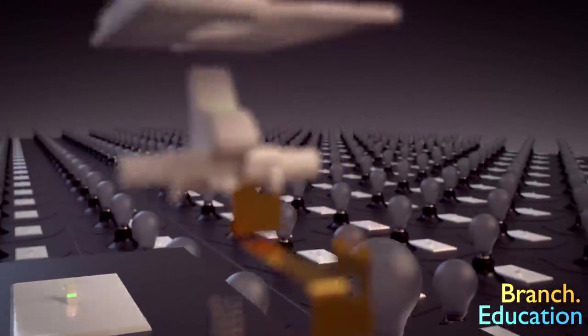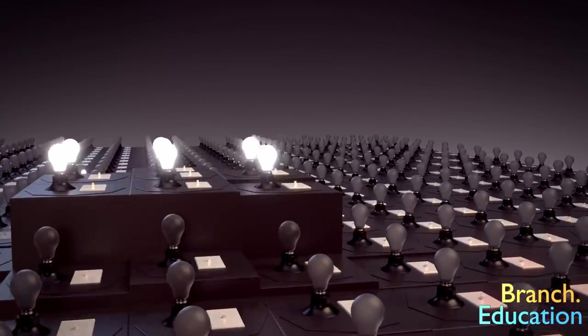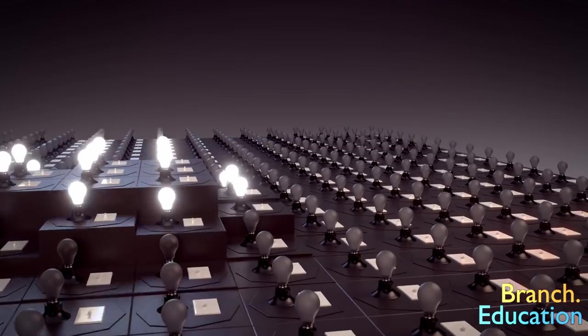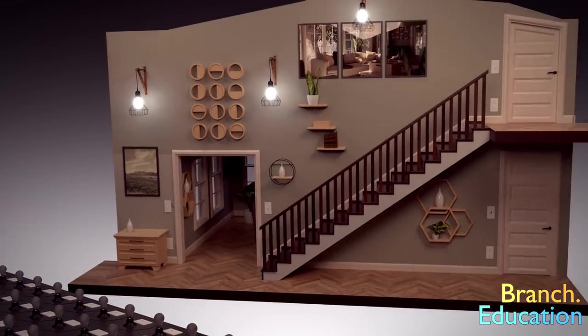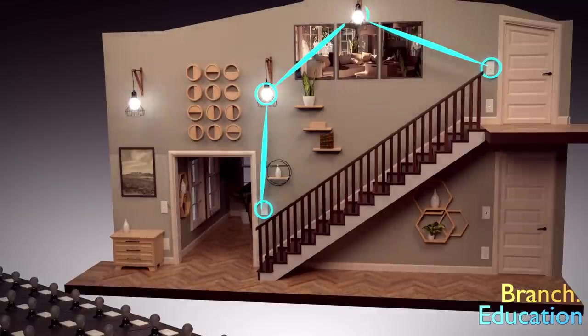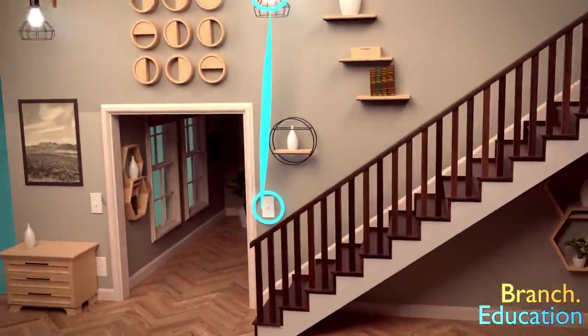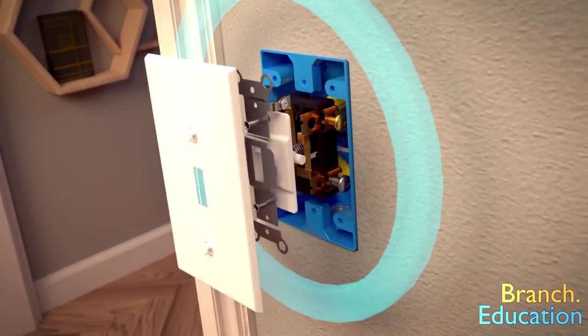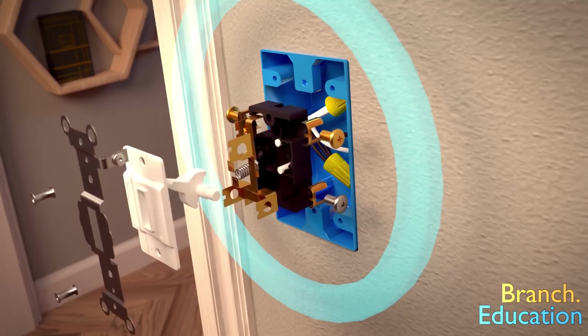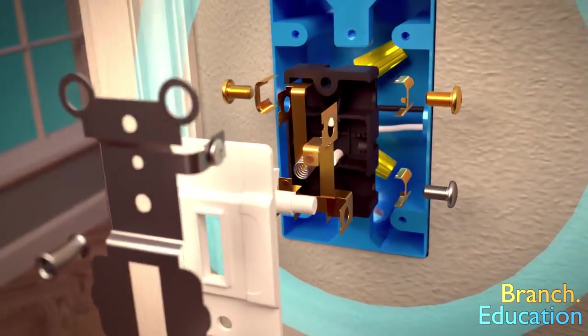Also, have you ever wondered how two, three or more light switches can be wired together and used to control the same set of lights, such as in the case of light switches positioned at the top and bottom of the stairway? Well, in this video we're going to explore the engineering inside the humble light switch, as well as how multi-way light switches work, so stick around and let's jump right in.